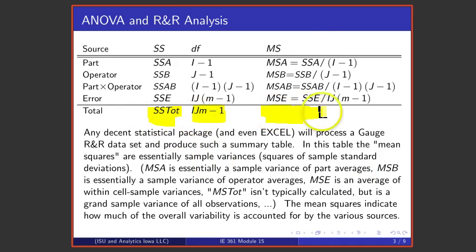The table manages a breakdown of these sums of squares and degrees of freedom into interpretable pieces, the first of which is a mean square for parts or items. That's essentially a sample variance of column averages in the table.